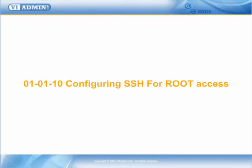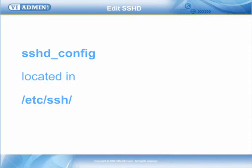Configuring SSH on ESX Server for root access. If you'd like to be able to remotely access an ESX server using the root account — which is not recommended — you'll need to edit the sshd_config file located in /etc/ssh. By default, the service console no longer allows the root account to log in using an SSH client.